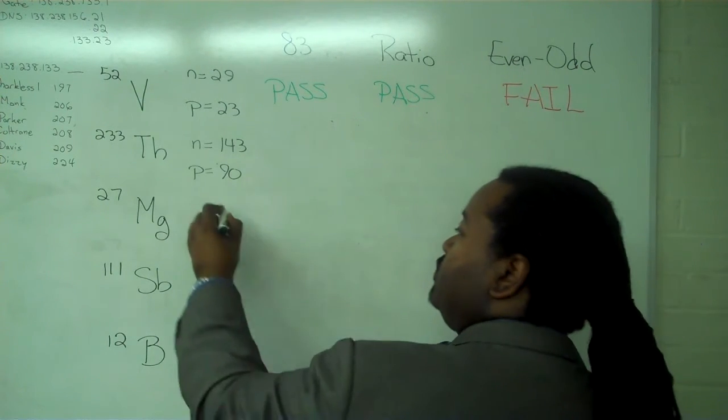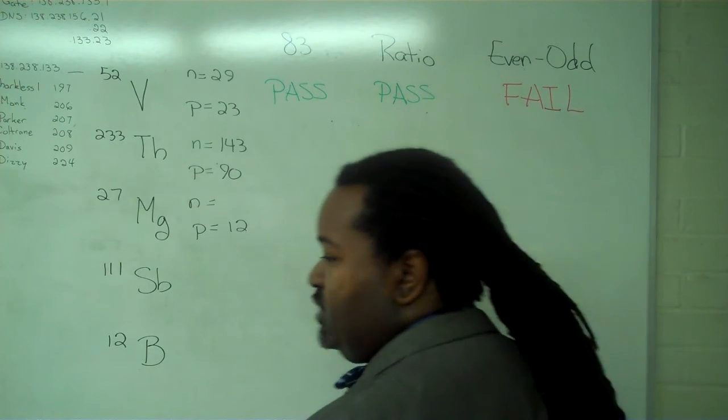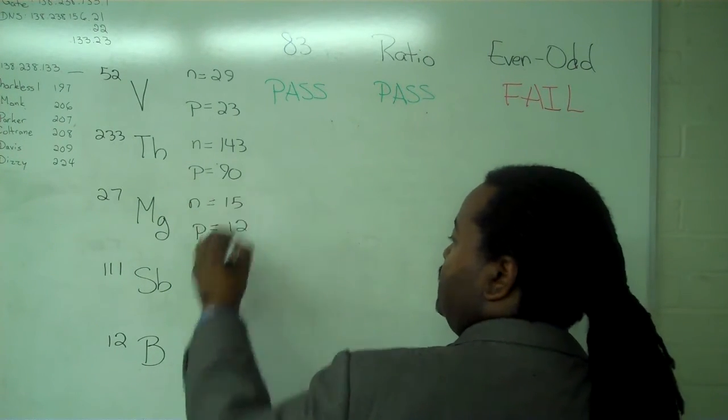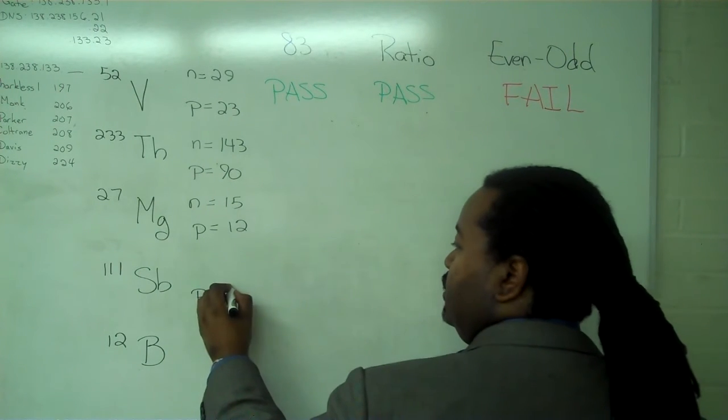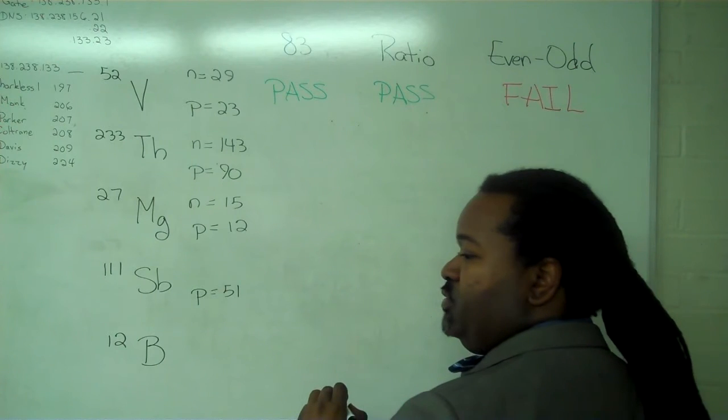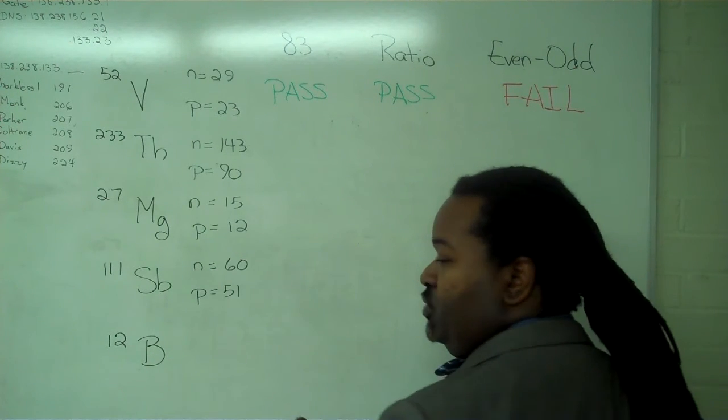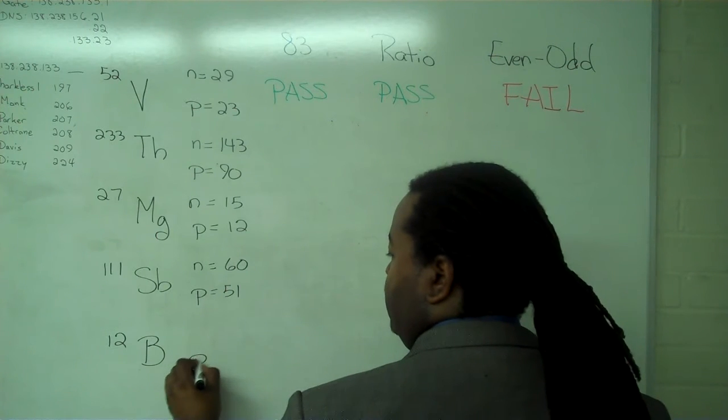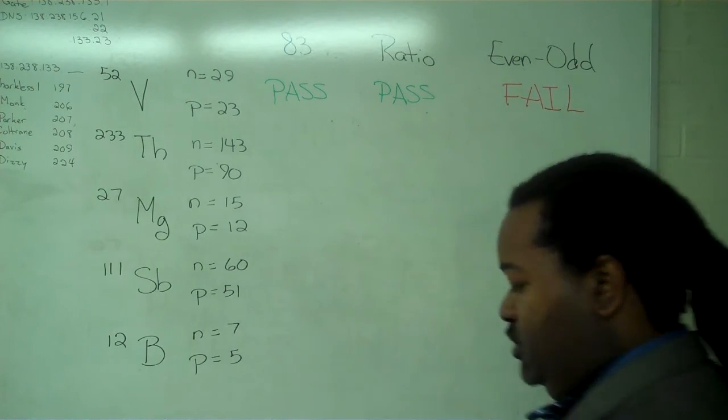For magnesium, the atomic number is 12. And this means that we have 15 neutrons. For antimony, the atomic number is 51. This means that we have 60 neutrons. And for boron, the atomic number is 5. So we have 7 neutrons.